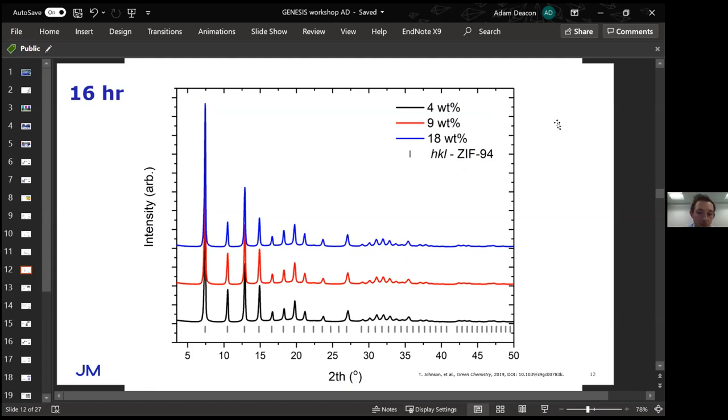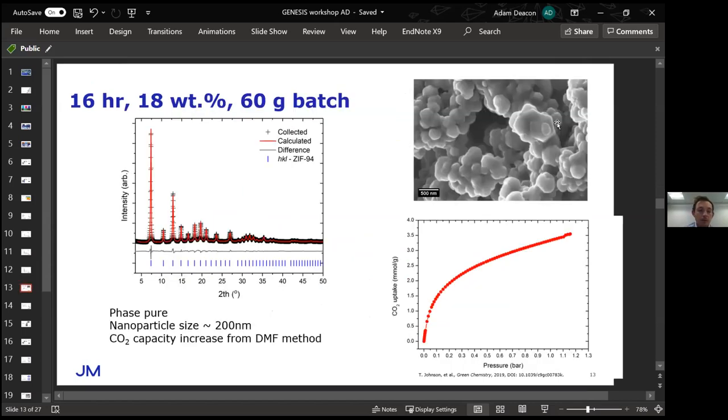These were only small five gram batches so we wanted to try a larger batch. We produced this material at a 60 gram batch scale and we can see we produce a phase pure material with the right characteristics and nanoparticle characteristics. In fact, this material showed an increase in the CO2 capacity versus the DMF method reported in literature, a really positive impact for us.